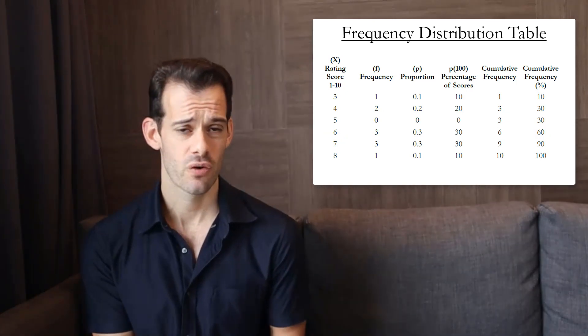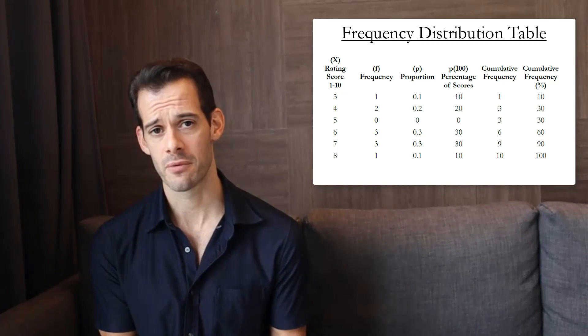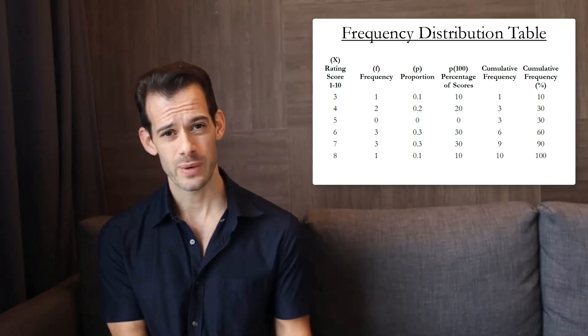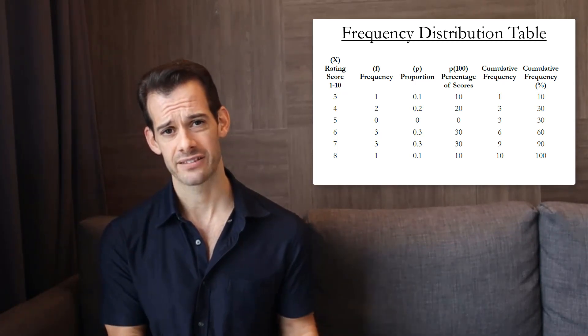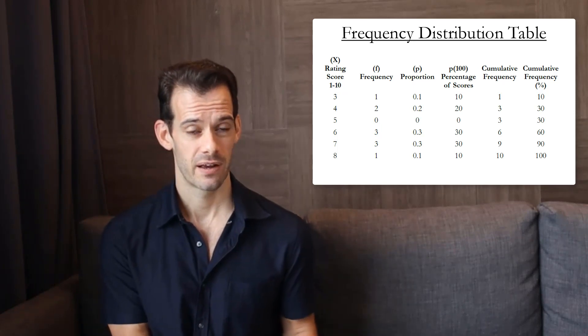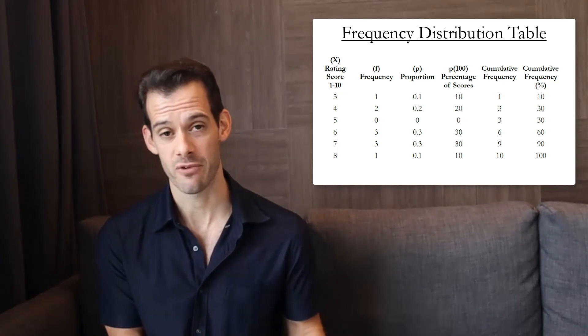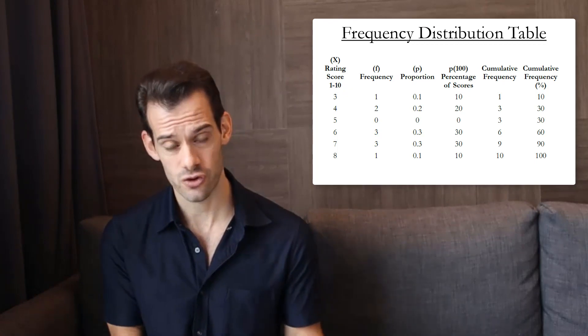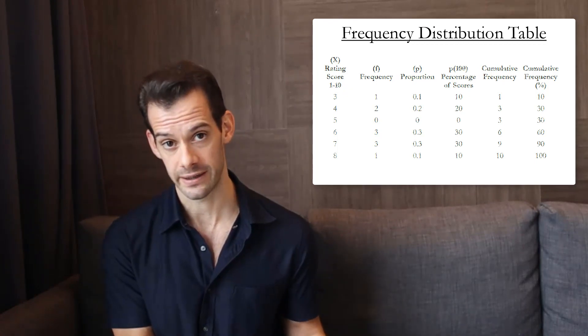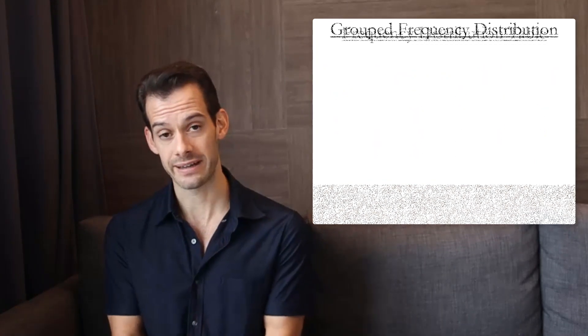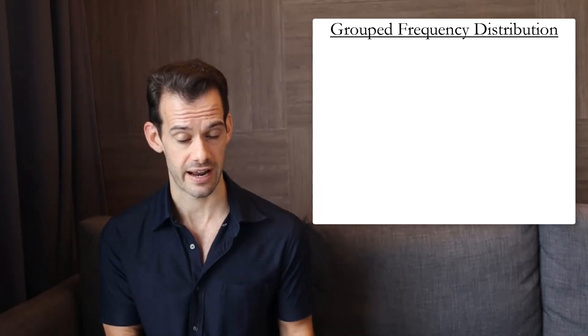With a small range of scores we're able to present all the possible values for x in one table. But as we get more and more possible values for x this becomes unwieldy. Once we have more than about 15 possible values for x our table is just getting too long and it's becoming too difficult to read. And so in this case we might decide that we want to use a grouped frequency distribution table.